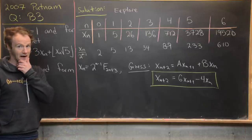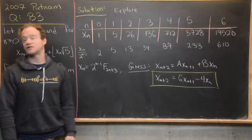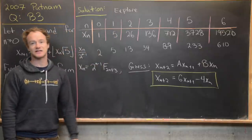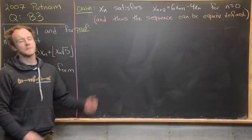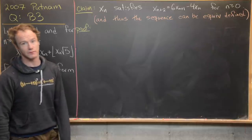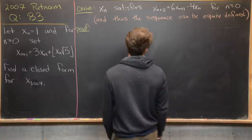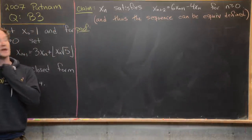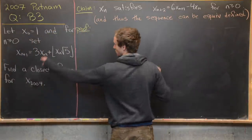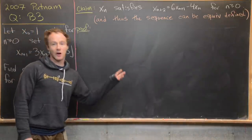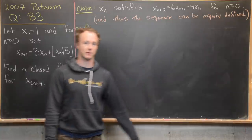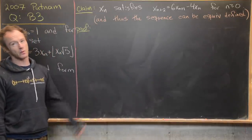What we need to do now is show that our recursively defined sequence — involving the floor function — satisfies this two-step recursion. If the sequence satisfies both this two-step and one-step recursion, it can be equivalently defined with the two-step recursion instead of the gnarly one-step version. That's nice because we can work with it more easily.